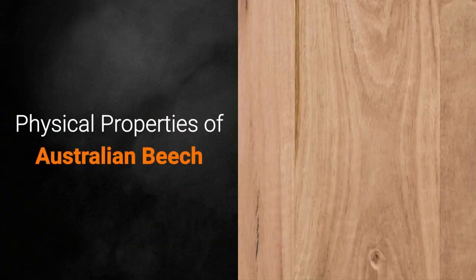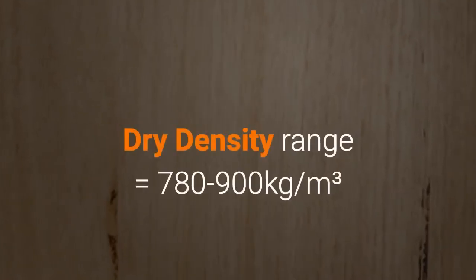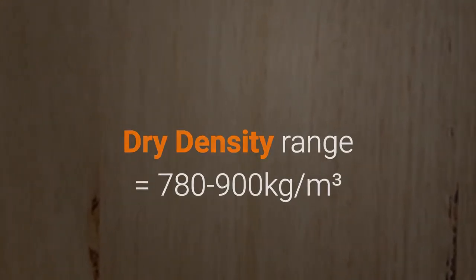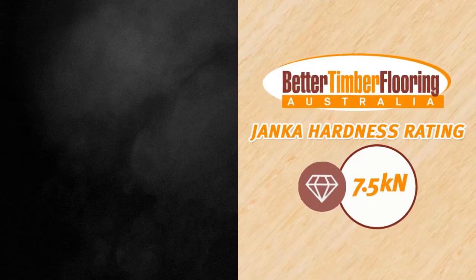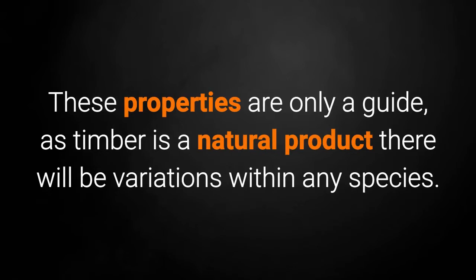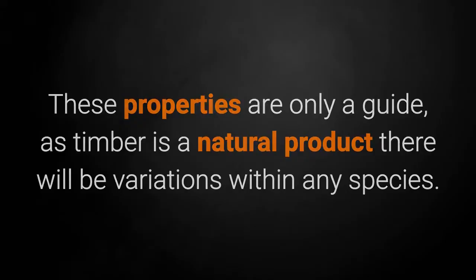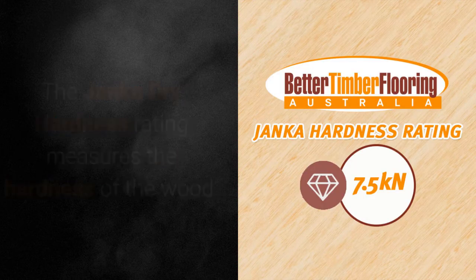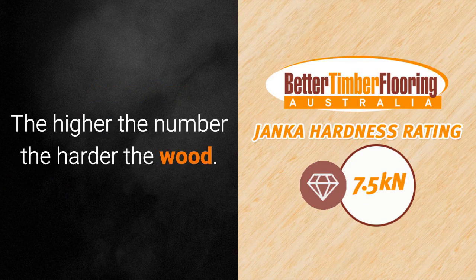Physical properties of Australian beech: dry density range equals 780 to 900 kg per cubic meter; Janka hardness equals 7.5 kN. These properties are only a guide, as timber is a natural product and there will be variations within any species. The Janka dry hardness rating measures the hardness of the wood — the higher the number, the harder the wood.